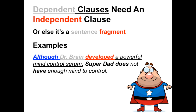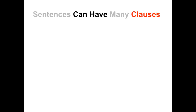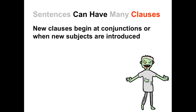The second clause is an independent clause — it has a subject and a predicate and expresses a complete thought. We could turn it into a dependent clause by adding a subordinating conjunction to it, such as 'although': 'Although Super Dad does not have enough mind to control' would be another example of a dependent clause. So the only thing that really separates a dependent clause from an independent clause is the presence of a conjunction. Sentences can have many clauses — not just one or two. New clauses begin at the conjunctions, which link clauses, or when new subjects are introduced.